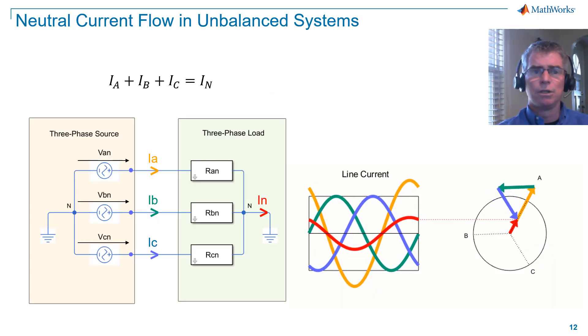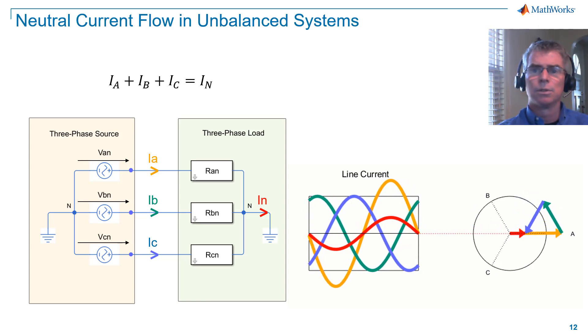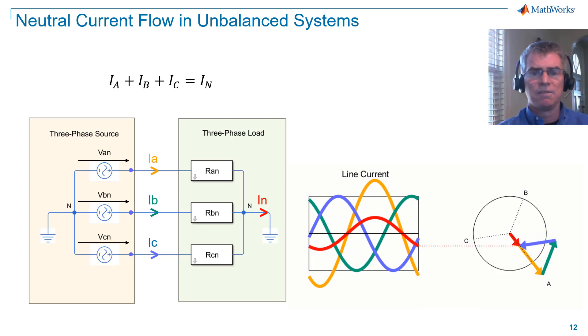If we now revisit neutral current, you can see that the imbalance means we now have a non-zero neutral current, which in this case is in phase with phase A current.